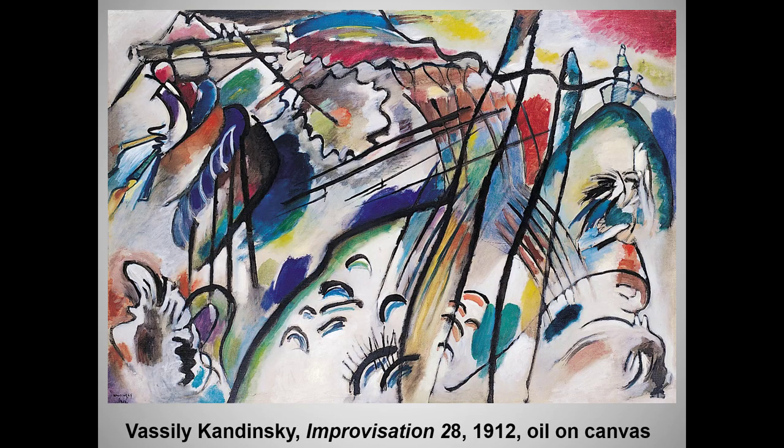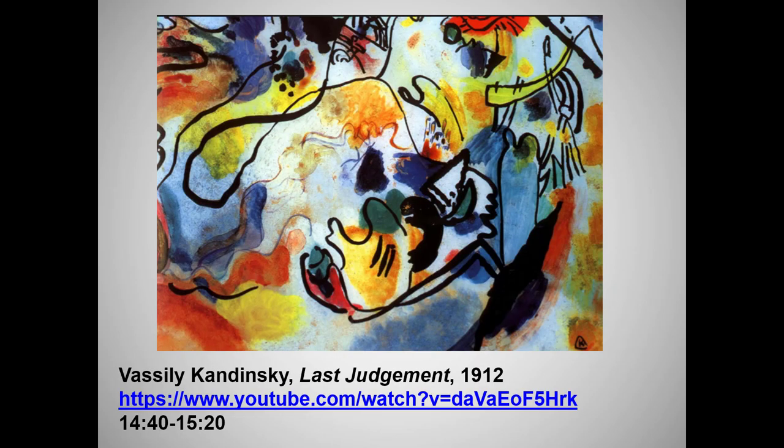Kandinsky is very important to art history because he's really the first modern artist to move entirely into the world of the abstract. He was especially influenced by what he saw as the perfect abstract art: music. Kandinsky sought to create image-free art that spoke directly to the senses the way music did. In fact, most of his works bear titles such as Composition or Improvisation.